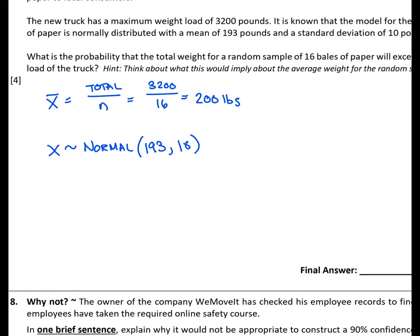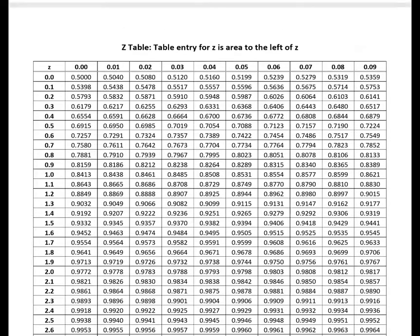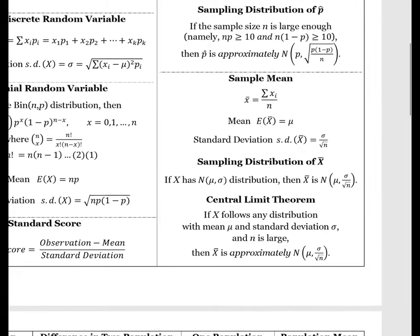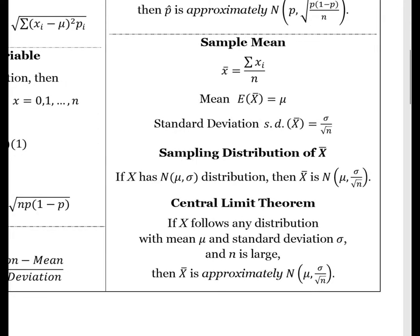So we have that x is approximately normal with a mean of 193 and a standard deviation of 10 pounds. But what we want is x bar. So if we look back at our formula card, we have our sampling distribution of x bar given here, which says if x has a normal distribution, which is what we have with a mean and a standard deviation, then x bar is going to be normally distributed around the same mean with a new standard deviation that takes into account the sample size.